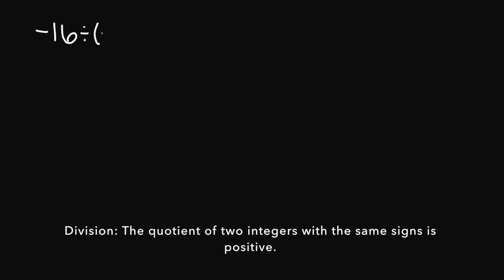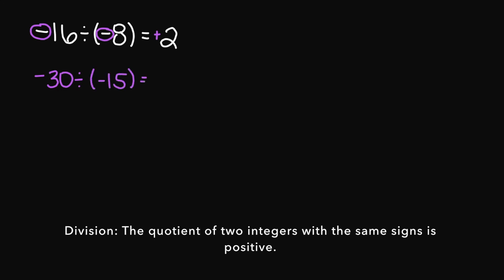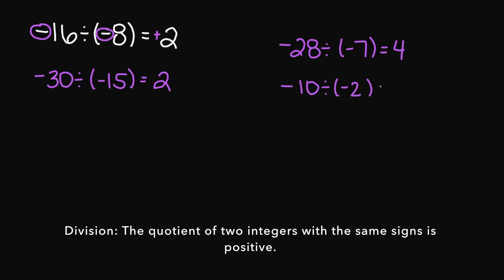Now the quotient of two integers with the same sign is going to be positive. So in this example we have a negative 16 and a negative 8 — that means I'm going to get a positive answer. Negative 30 divided by negative 15 equals positive 2. Negative 28 divided by negative 7 equals positive 4. Negative 10 divided by negative 2 equals positive 5.